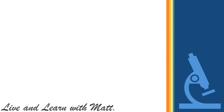Do different animals have different life circles? Let's take a look. Number one: the life circle of animals that lay eggs. When these animals lay eggs, their young hatch out from them and then grow into adults. There are two types of life circles for these kinds of animals.